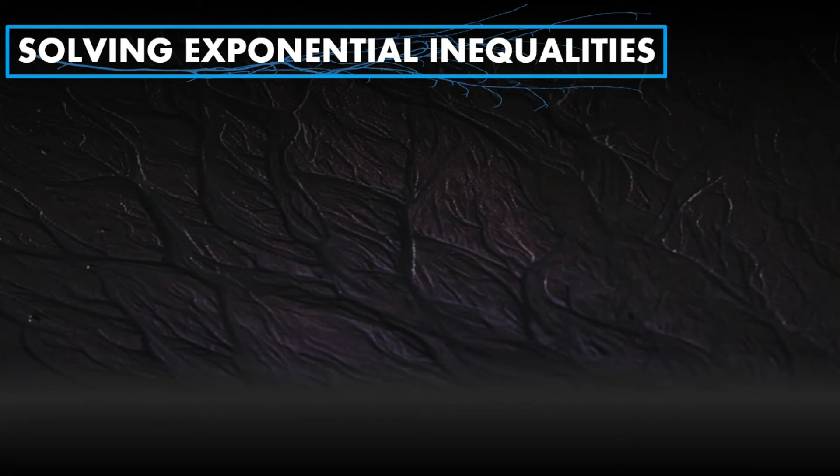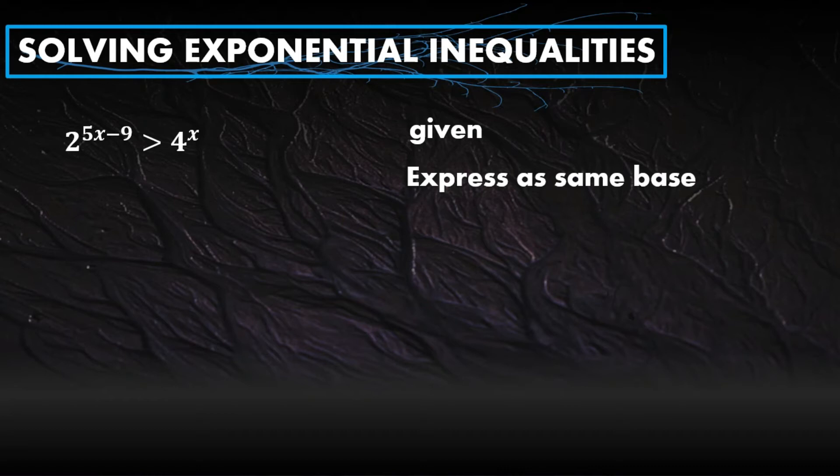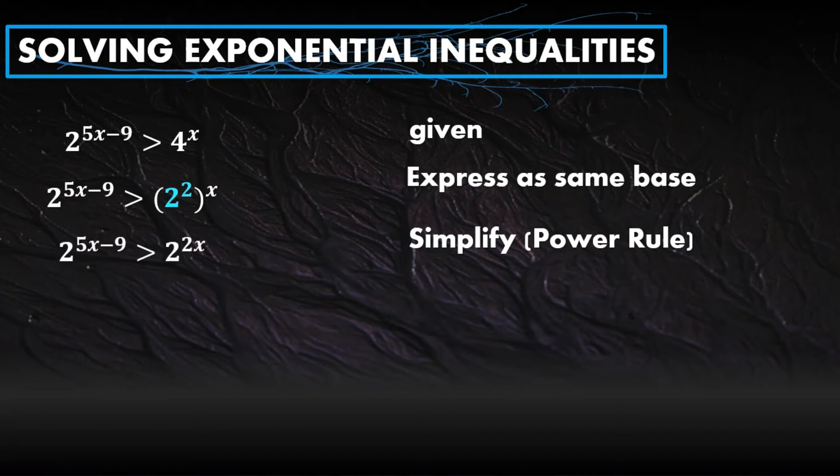Let's apply this to examples. For instance, we'll solve the inequality 2 raised to 5x-9 greater than 4 raised to x. When solving, always start with the given. After that, express those expressions into same bases. Again, when expressing to the same base, find the lowest possible base. For 2, we can't do anything except 2. Meanwhile, 4 can be expressed as 2 squared. After that, we will simplify using the power rule, which is from lesson 1. That becomes 2 raised to 2x. We just multiply those exponents according to the power rule.